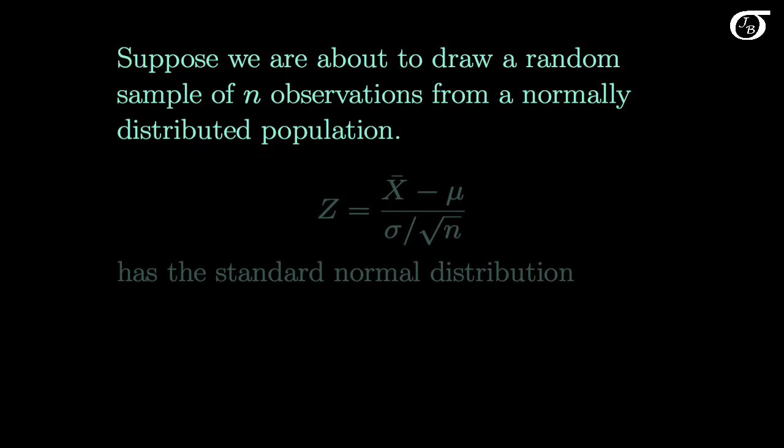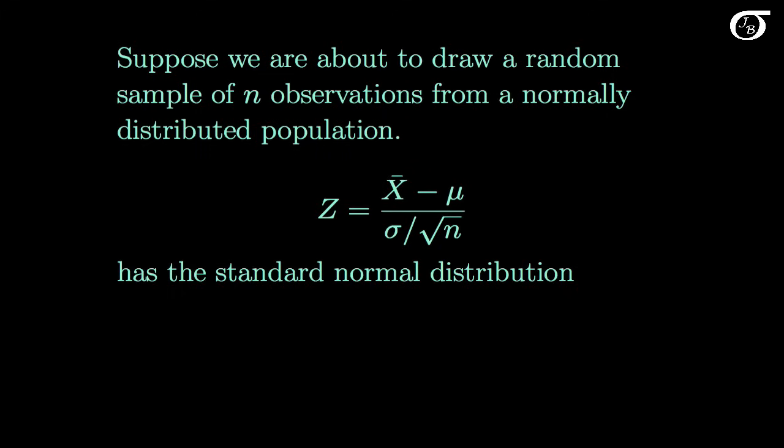Suppose we are about to draw a random sample of n observations from a normally distributed population. We've previously learned that the quantity x̄ minus μ over σ over the square root of n has the standard normal distribution, and we typically label that with the letter z.